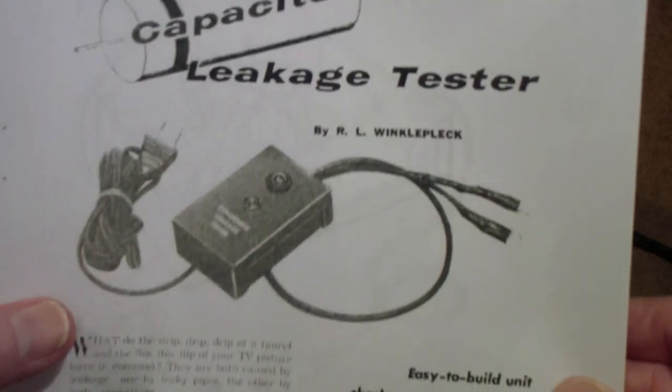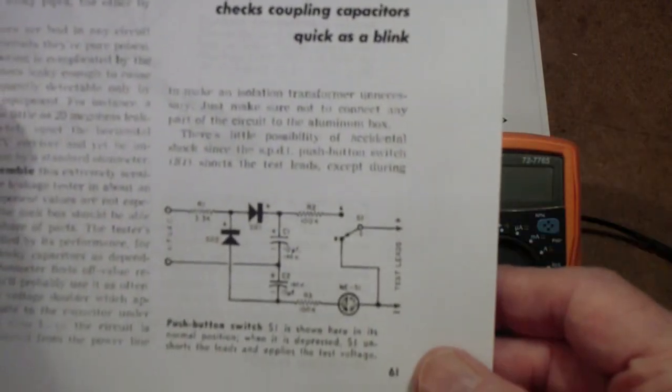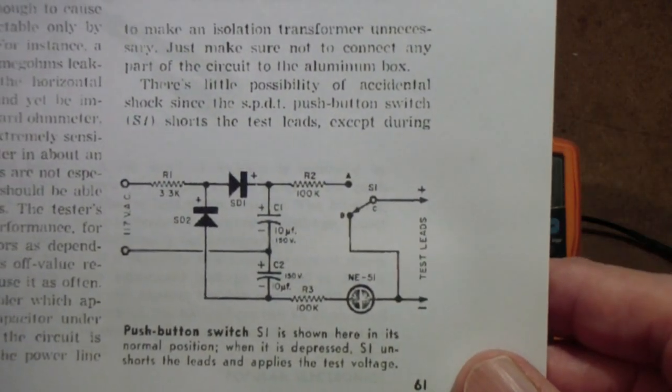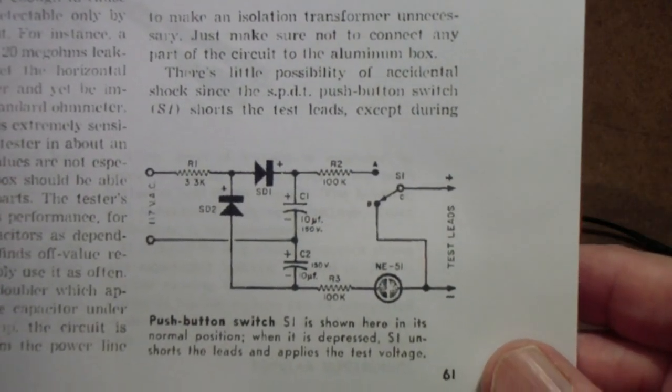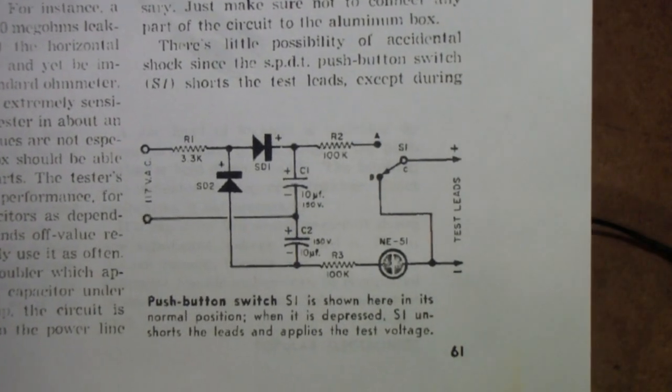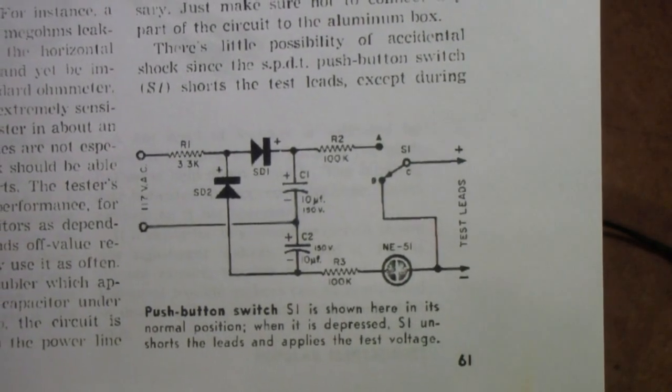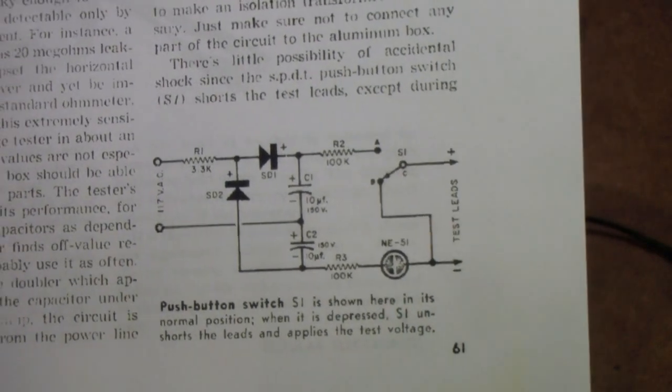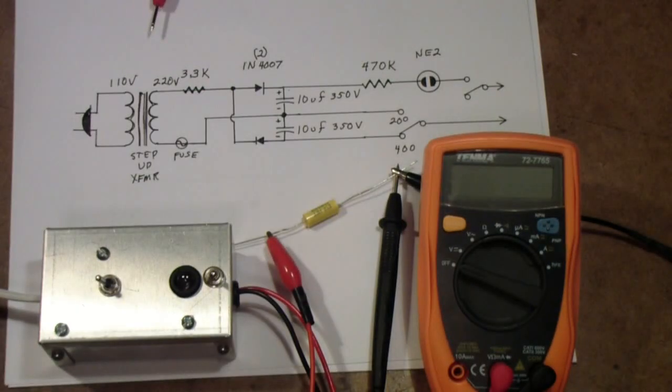It's a leakage tester. I have modified the circuit somewhat, partly because the tester shown here would only work up to about 200 volts, and some of the radios I restore often have surge currents of 450 or 500 volts. So I wanted to increase the voltage but without losing the ability to test the lower voltage capacitors.